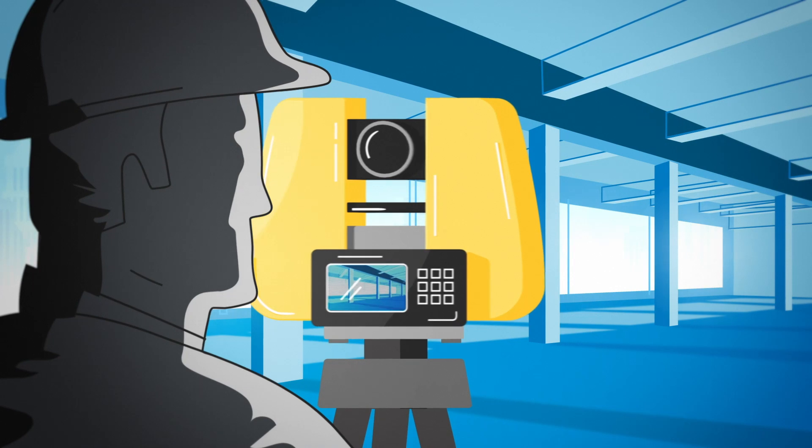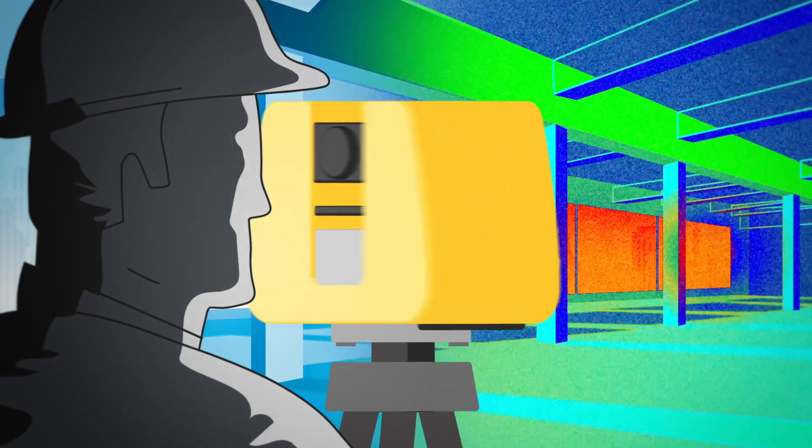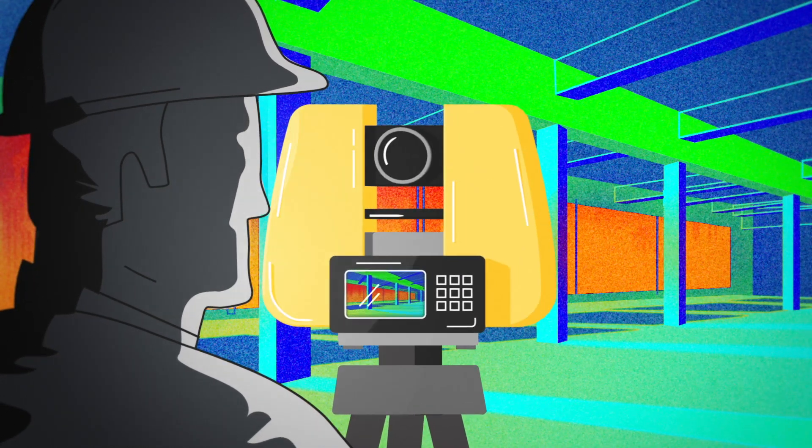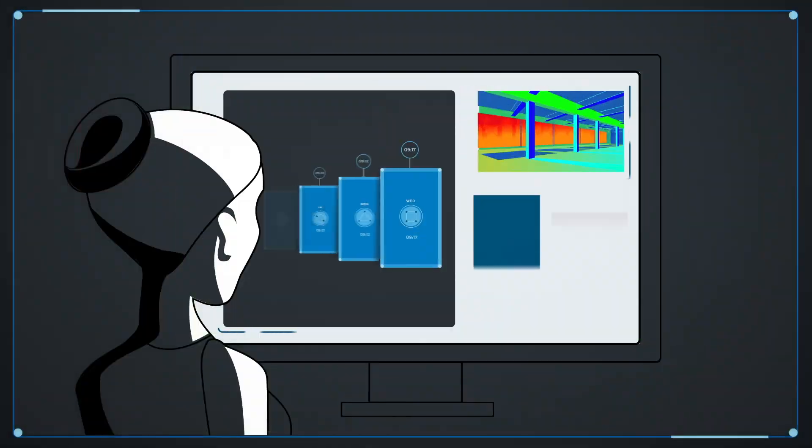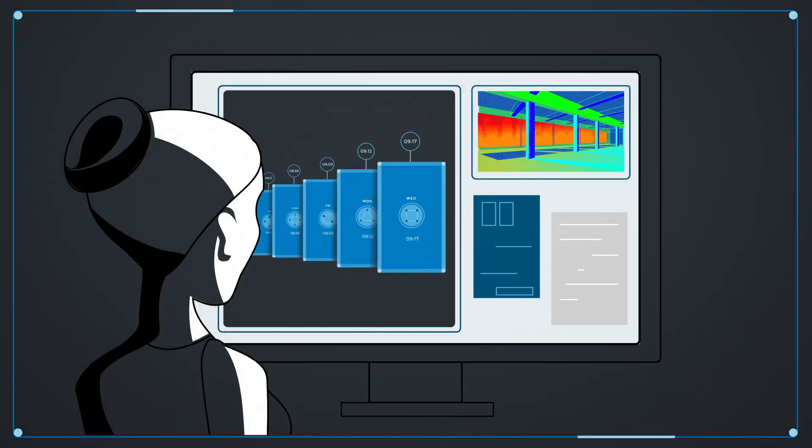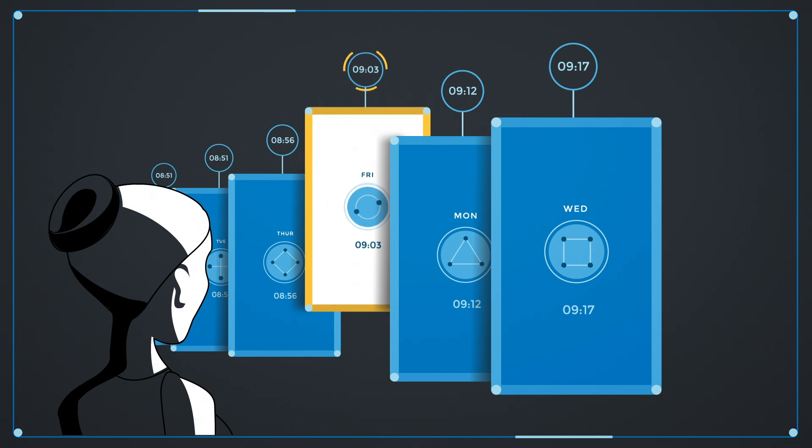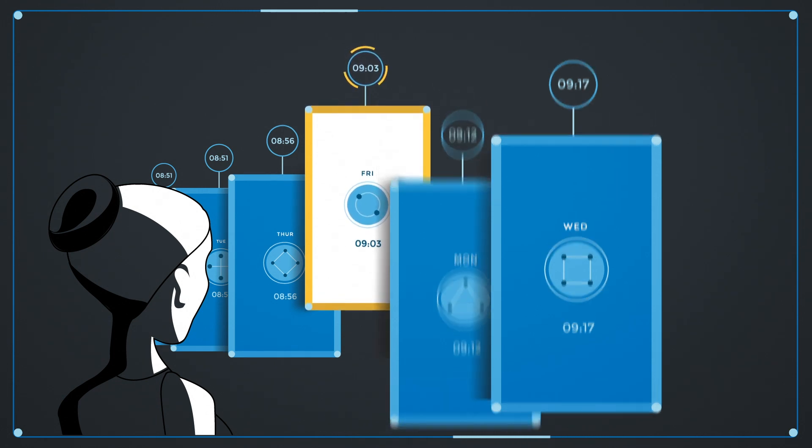Laser scanners are invaluable in these situations because they allow contractors to record progress and compare data to the original model. If a discrepancy arises, the contractor can simply reference historical scans and identify the issue.